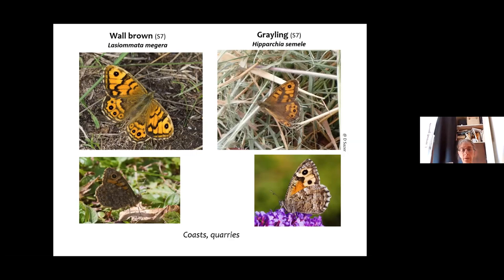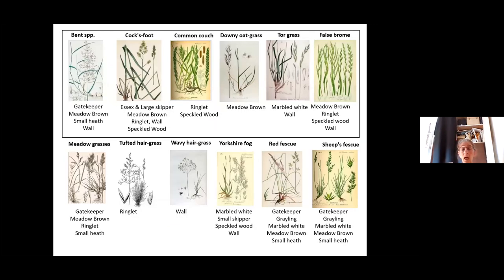They're both special butterflies. You don't need to memorise all of this — it was just to show all these brown species, and also the skippers. All the browns feed on various species of grasses — all these different grasses suitable for different butterflies. All the butterflies have more than one grass they can lay their eggs on, which helps them be widespread.